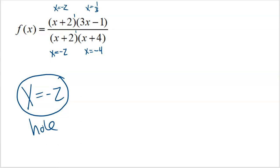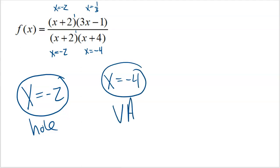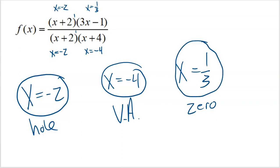We might as well talk about the other values too. x equals negative four only makes the denominator equal to zero, so that's going to be a vertical asymptote. And x equals one third is going to be a zero, a solution, or an x-intercept of the graph, because one third only makes the numerator equal to zero. This video is focusing on holes, but it's worth talking about what's happening at these other values.